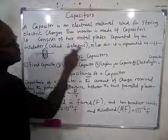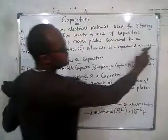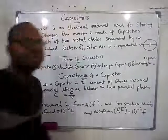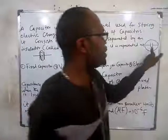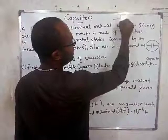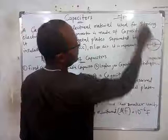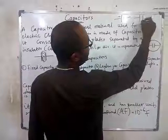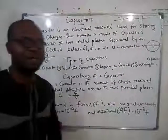A capacitor is represented using this symbol. When you are drawing an electric circuit, you represent a capacitor with this symbol. If you are representing a cell, the symbol looks like this — with a positive terminal and a negative terminal. But for a capacitor, the two vertical lines are equal.